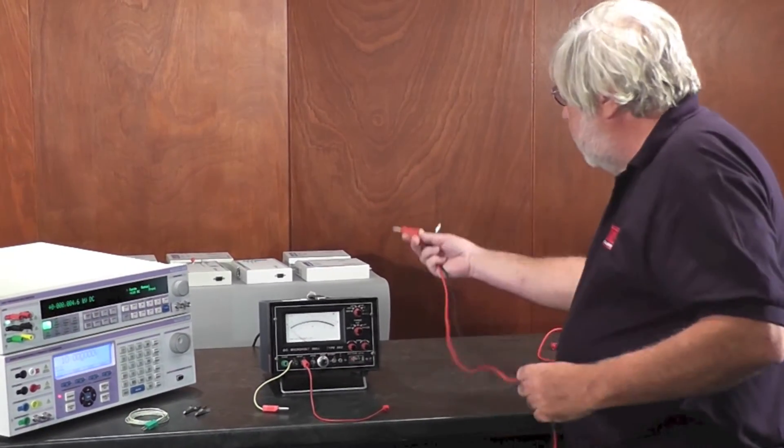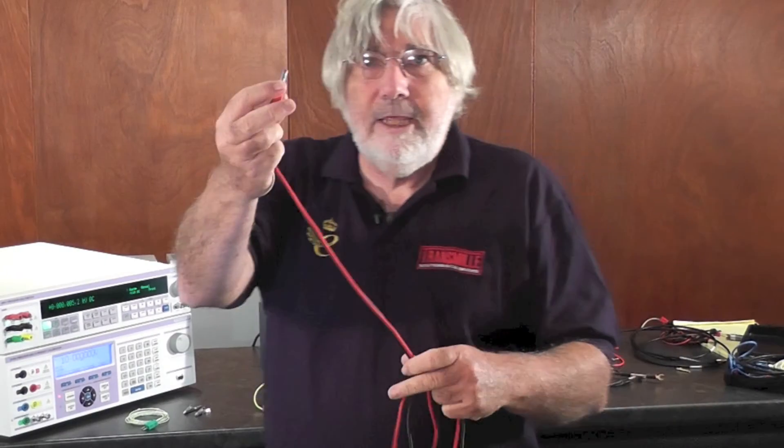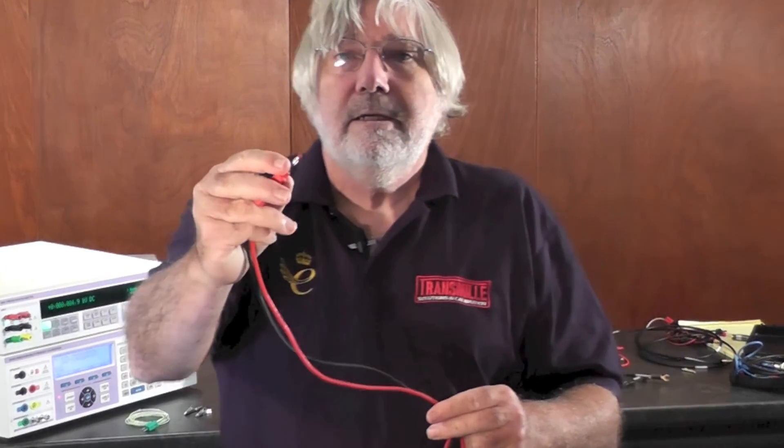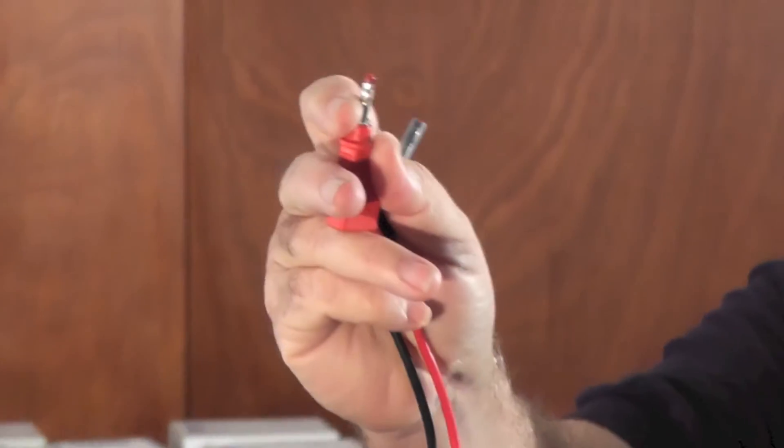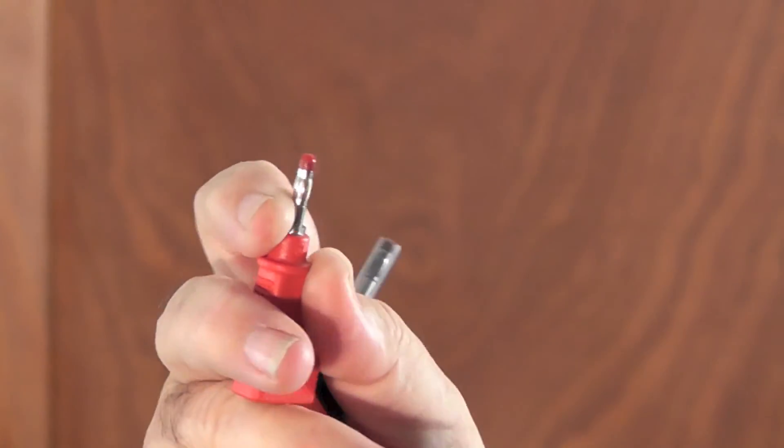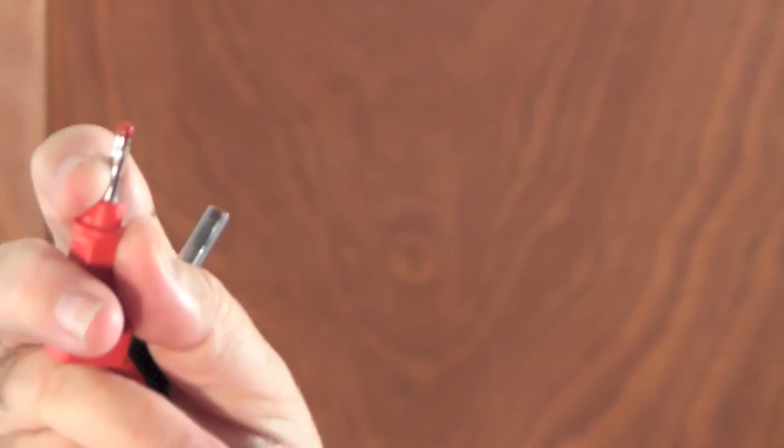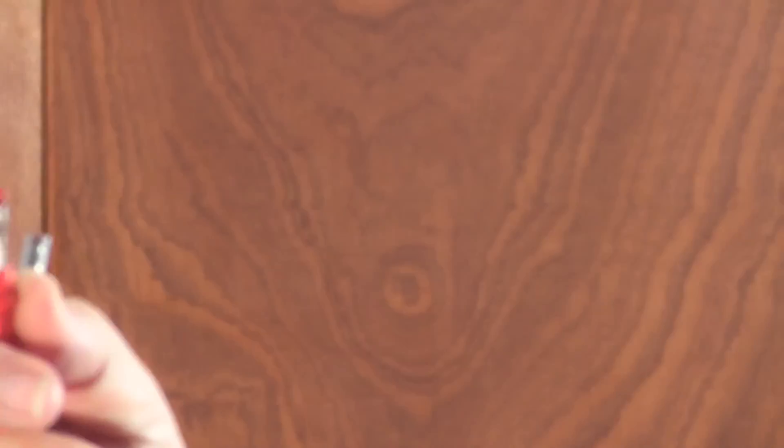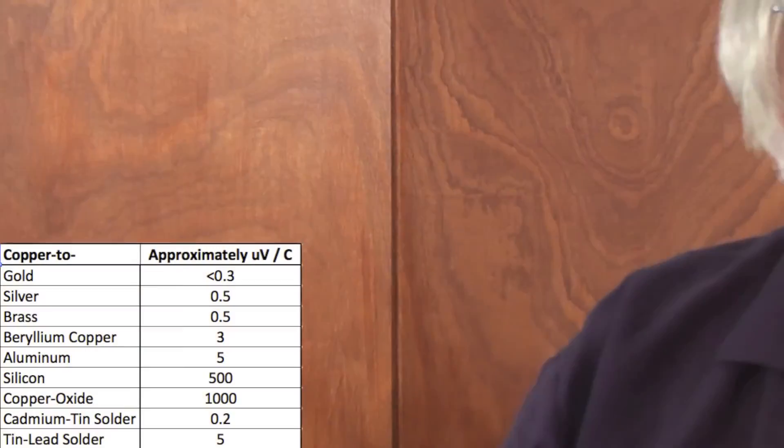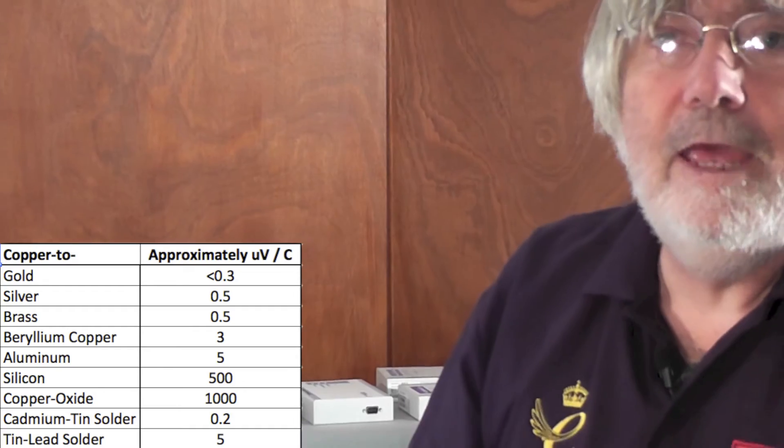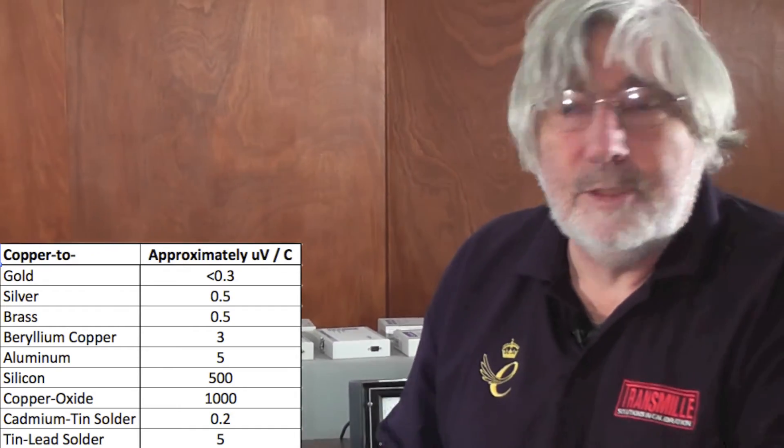So when you see test leads like this that have usually a silvery finish on them, could be tin (tin isn't actually too bad), could be nickel (nickel of course is disaster) or chrome to make the ends nice and shiny so they look good in the shop, but they're really not much good for making a precision measurement.